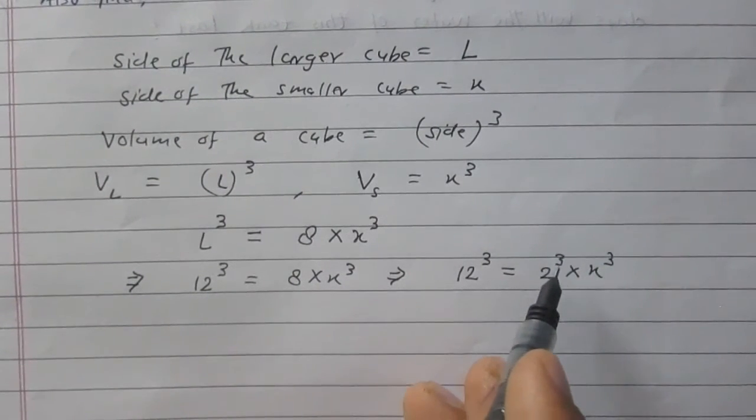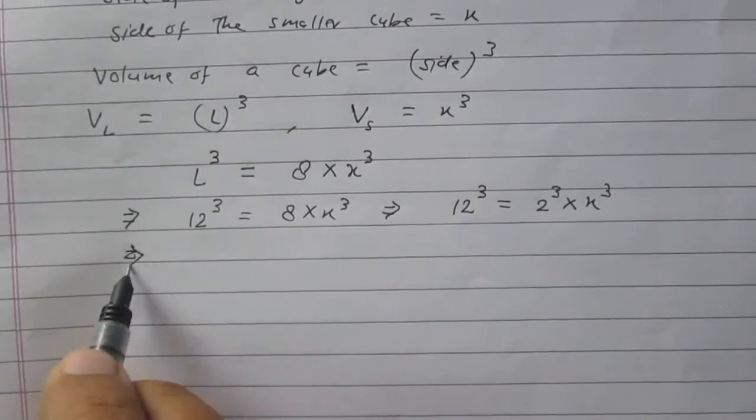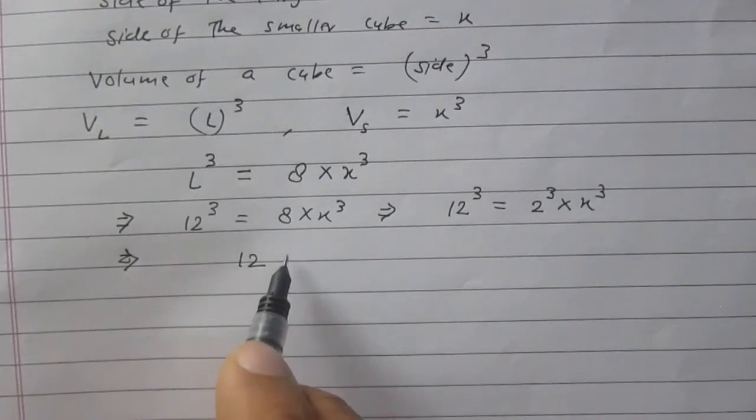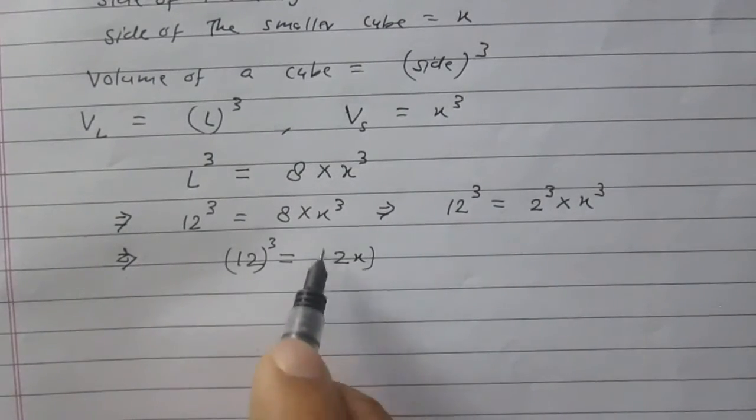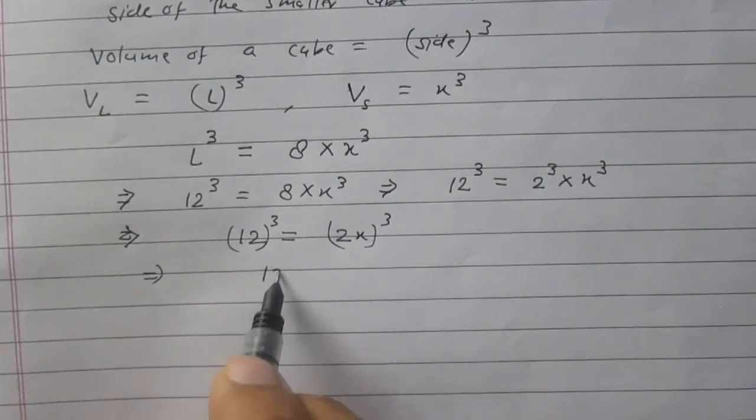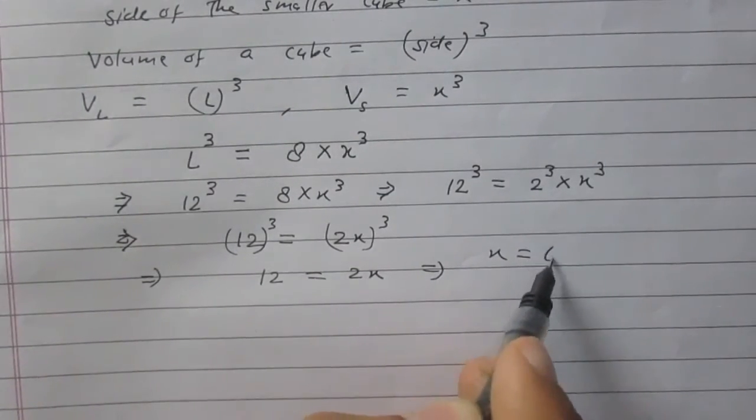It is 2 raised to power 3, so we can say that it is 2 cube. Further, by the rules of exponents, we can write 12 cube is twice of X cube. Or simply, you can say that 12 is equal to 2X or X is equal to 6.